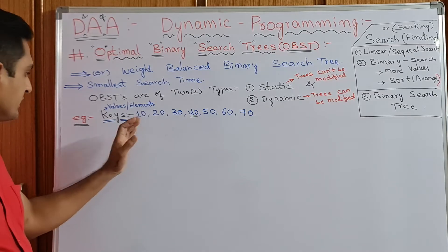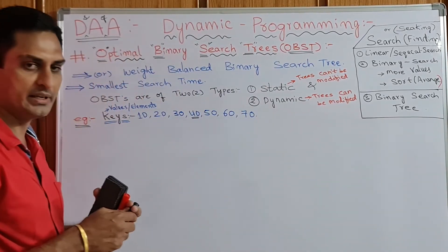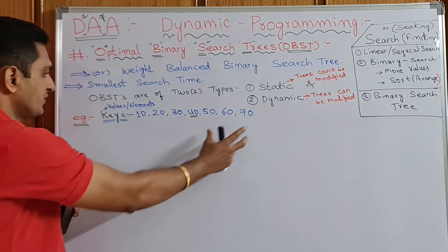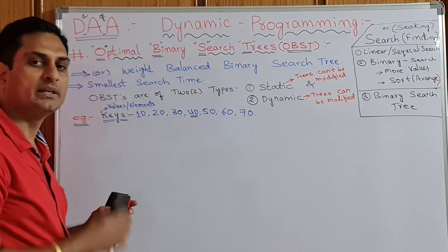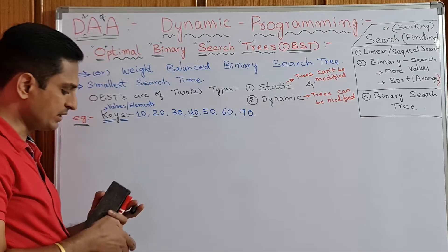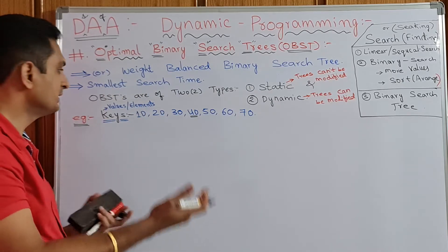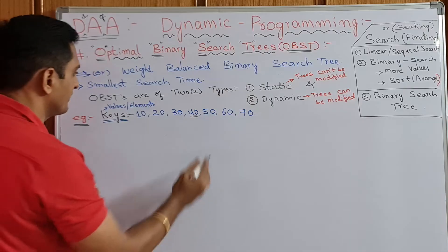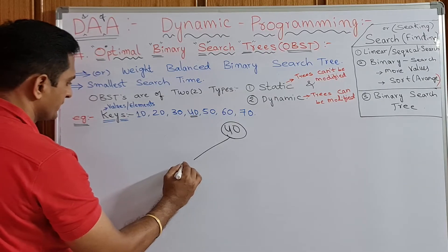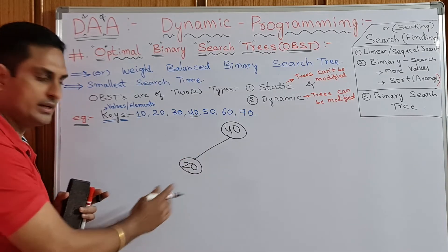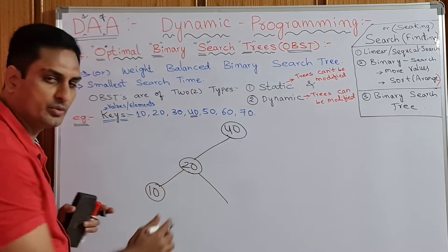For example, take keys: 10, 20, 30, 40, 50, 60, and 70. For the optimal binary search tree, we have two conditions: the left side of the root node values should be lesser than the root value, and the right side values of the root node should be bigger values. In that way we need to draw the tree — that's why it is called optimal binary search tree, overall balanced.